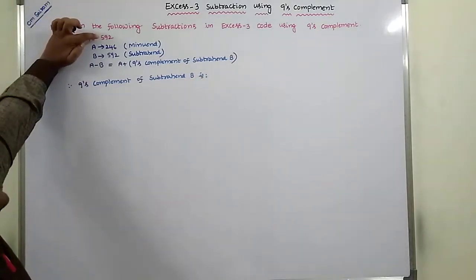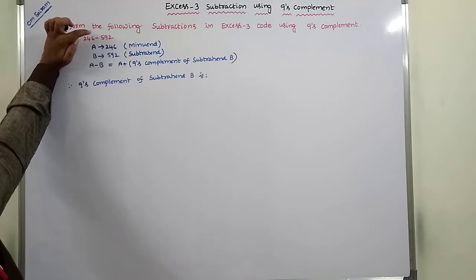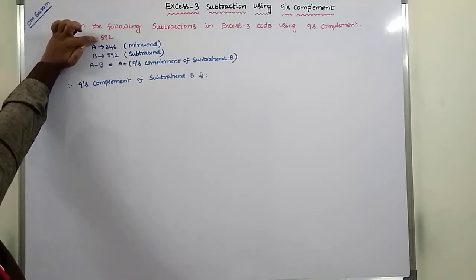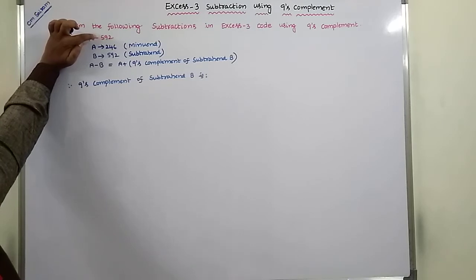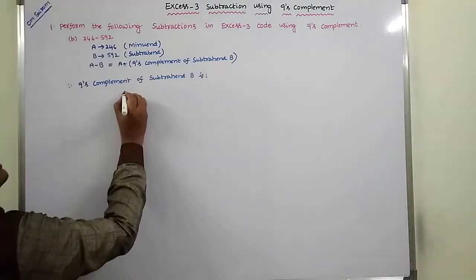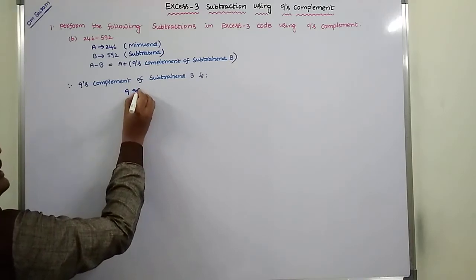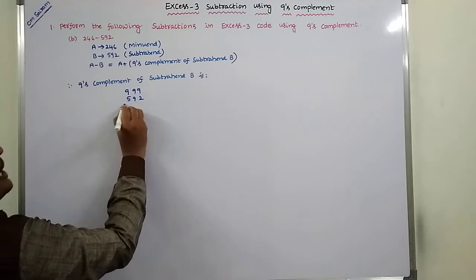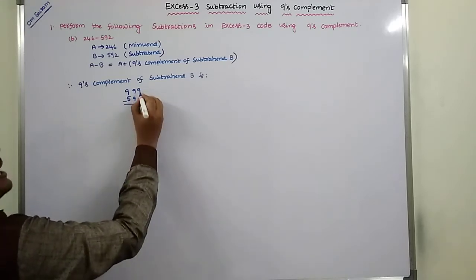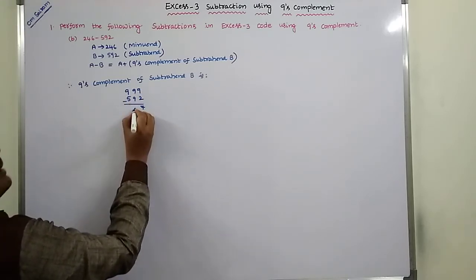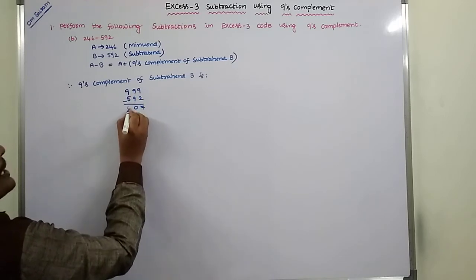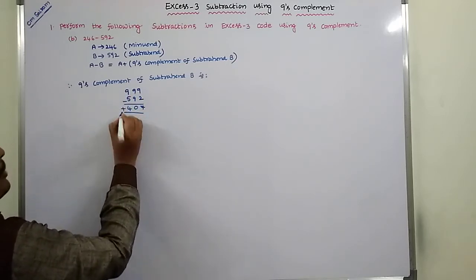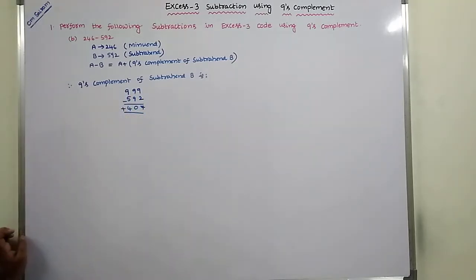Here B is equal to 592. There are three digits, and each and every digit is subtracted from 9. So: 9 minus 2 is 7, 9 minus 9 is 0, 9 minus 5 is 4. That gives us 407 — the 9s complement of B.